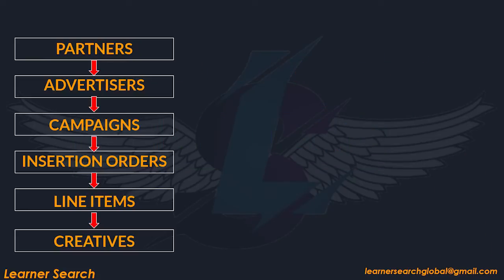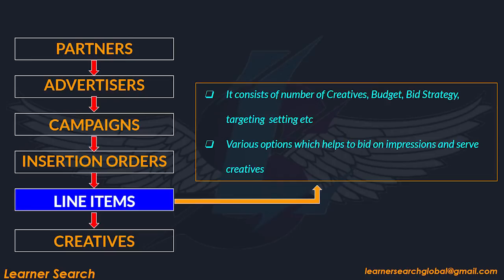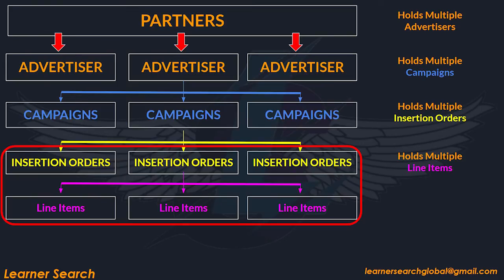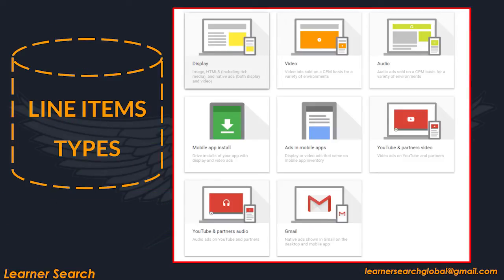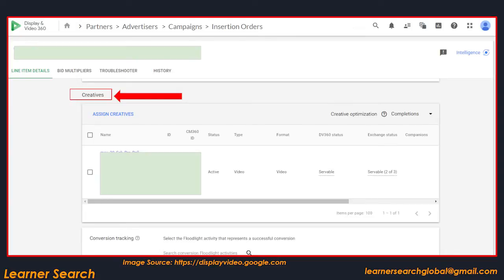Next, line items. A line item holds a number of creatives and mainly consists of creatives, budget, bid strategy, and targeting settings. This line item contains various options which help to bid on impressions and serve creatives. You can see that a line item holds multiple creatives. There are different types of line items like display, video, audio, mobile app install, ads in mobile apps, YouTube partner video, YouTube partner audio, and Gmail.